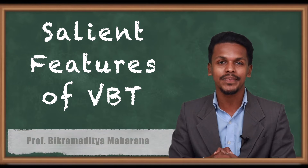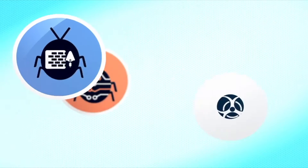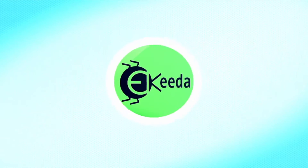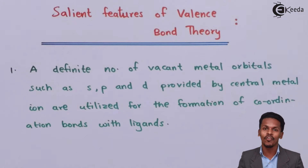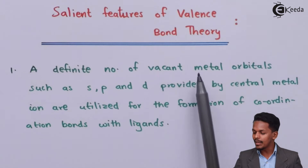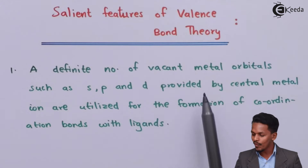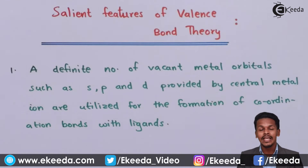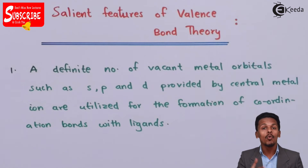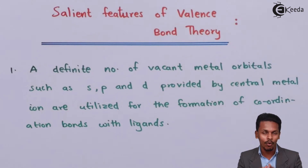Before understanding the application of the valence bond theory, let us understand the main features applicable in the metal complex. The first feature: a definite number of vacant metal orbitals — s, p, and d — provided by the central metal ion are utilized for the formation of coordination bonds with ligands. The more the number of vacant orbitals, the more ligand molecules will approach the metal, forming coordination covalent bonds.